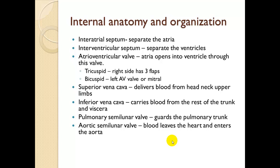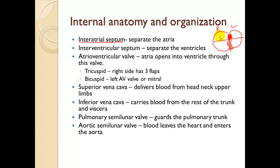Internal anatomy: the interatrial septum separates the atria, and the interventricular septum separates the ventricles. The atrioventricular valves open the atria into the ventricles. On the right side we have three cusps — the tricuspid valve. On the left side we have two cusps — the bicuspid valve. A way to remember: the tricuspid is always right.